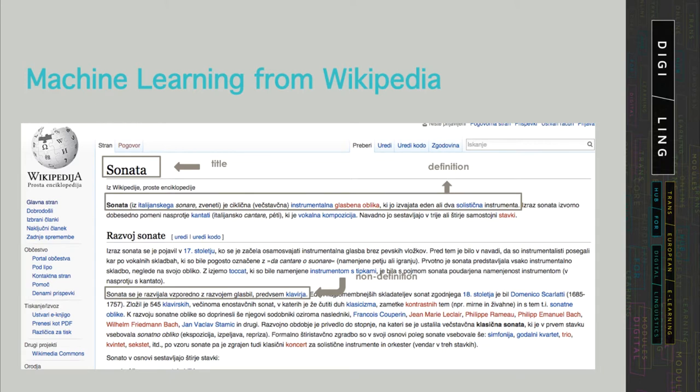there is a very handy source, namely the Wikipedia, where each Wikipedia article is normally composed or has a certain structure, so there is a title. And the first sentence in the article is the definition,